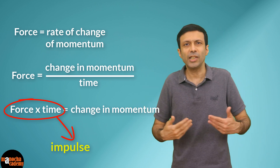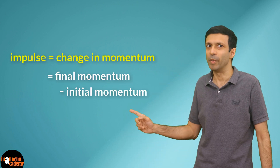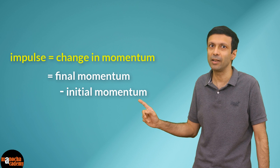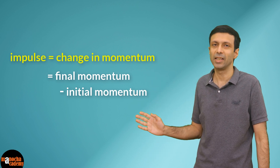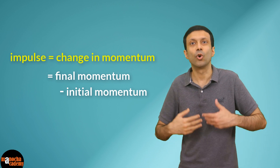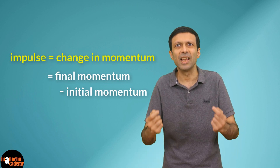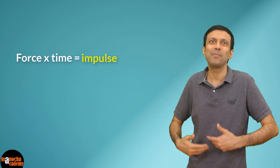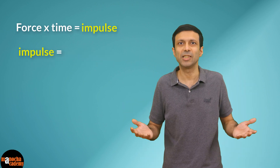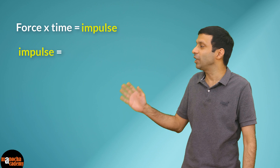So impulse equals the change in momentum of the body. Change in momentum is calculated as final momentum minus initial momentum — it is always final minus initial, never the other way around. The trick is that when you have a large force for a short time, force and time are individually difficult to measure, but their product — force multiplied by time — can be measured easily, and it is called impulse.